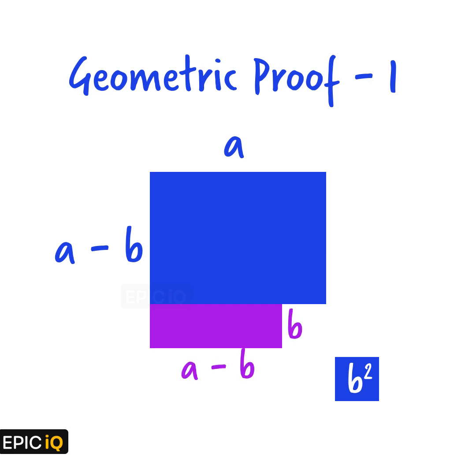The smaller region at the bottom will have width a minus b and height b. Now, you would notice that the width of the smaller region is a minus b, which is the same as the height of the larger region.